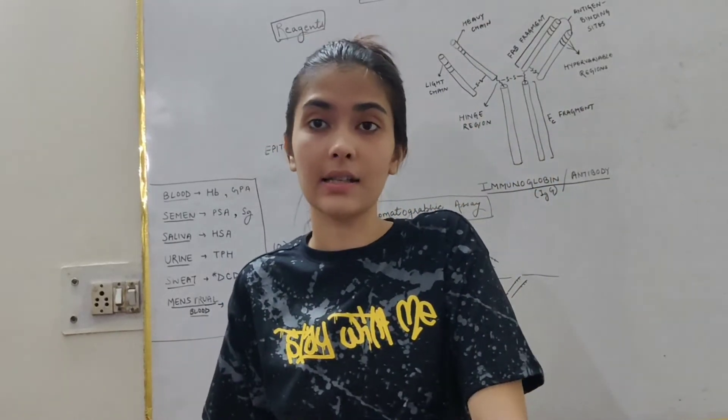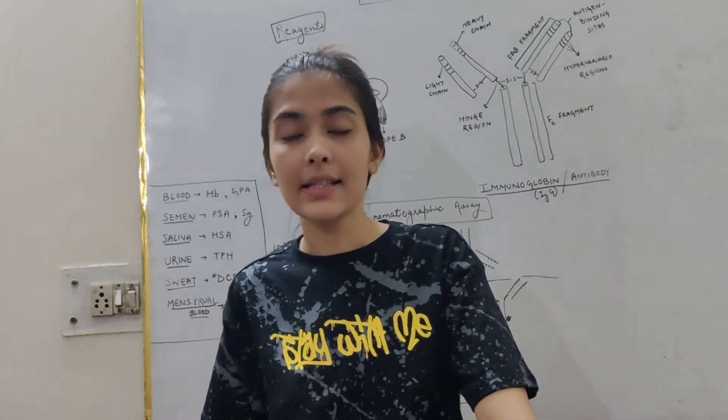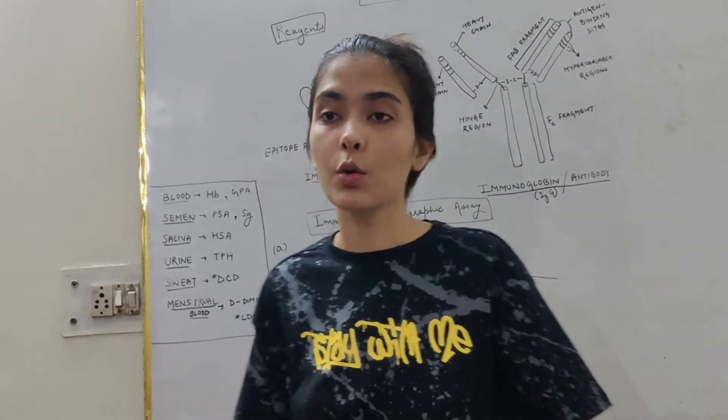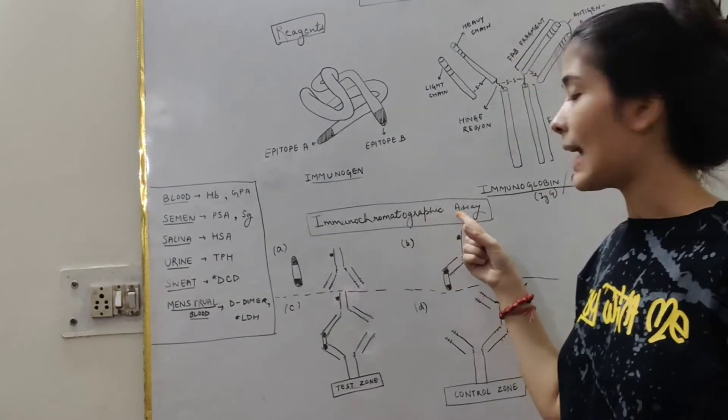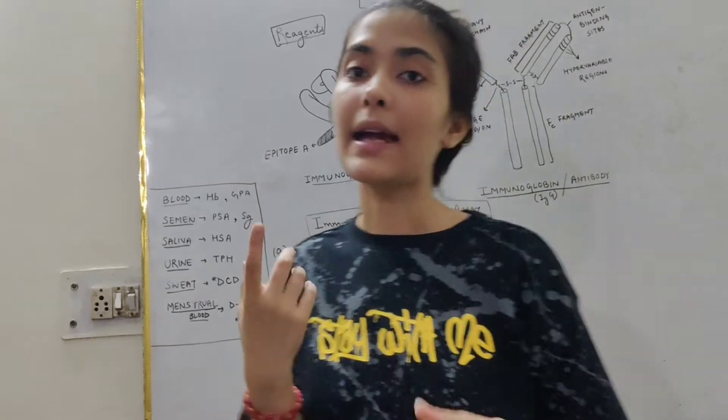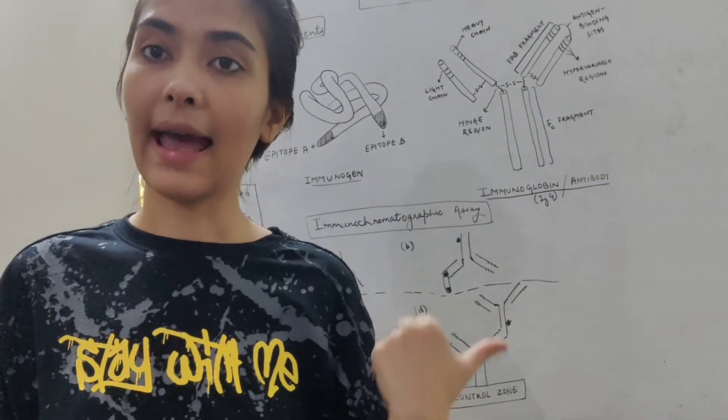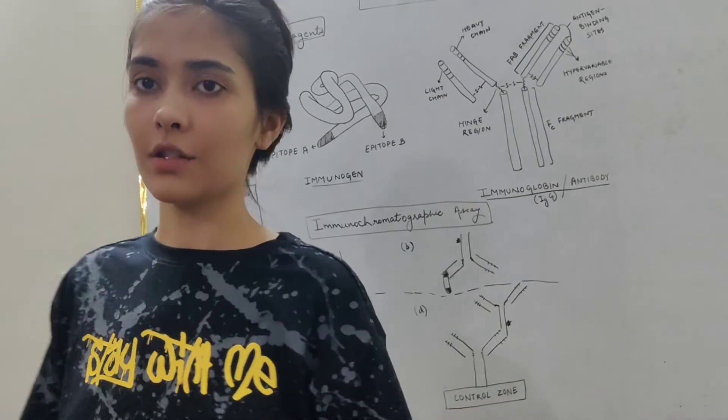Have you ever wondered what is the mechanism behind those kits? How are they so fast and how are they so sensitive and specific? These kits are actually based on immunochromatographic assays. These are actually based on the binding capacity of our immunoglobulin and the antigen.